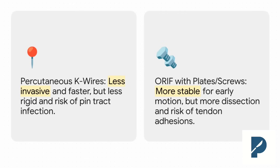So let's say your fracture's unstable and needs fixation. K-wires or plates? There's no one-size-fits-all answer — it's all about weighing the pros and cons. K-wires are great because they're less invasive and preserve more of the soft tissue envelope, but you have the risk of pin-track infections. On the flip side, plates or screws give you super rigid fixation, which is awesome for starting early motion. The downside is it's a bigger dissection, and you always worry about hardware causing tendon irritation or adhesions down the line.